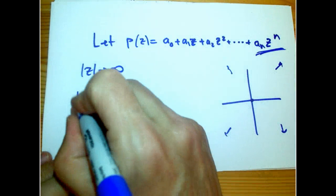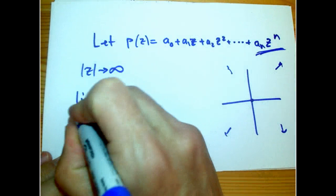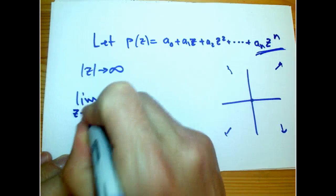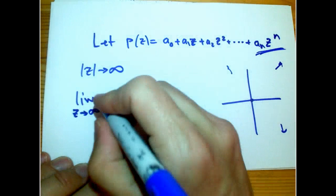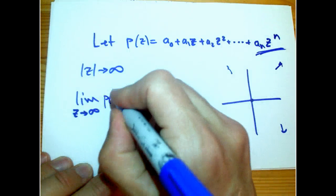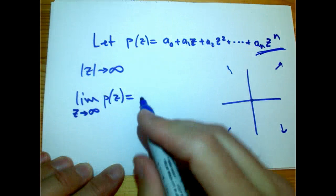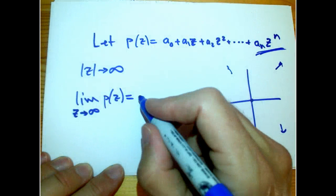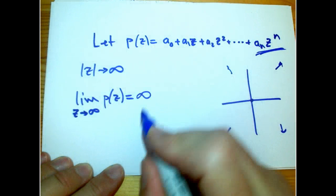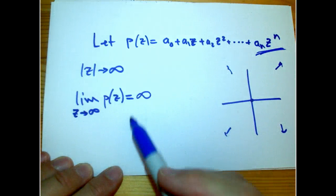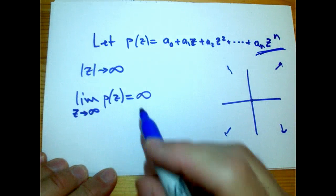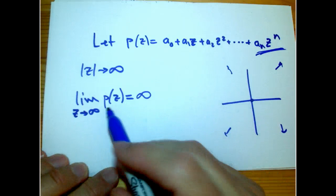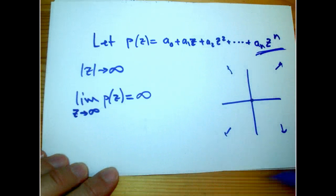So there's a very convenient way to say that. It's simply that the limit as Z goes to infinity — and this really means in any direction, it's a pretty powerful statement to make, but it's true — is infinity. Which means all those values are getting big in magnitude. The key thing is that the magnitude gets very, very big, very far away from the origin.